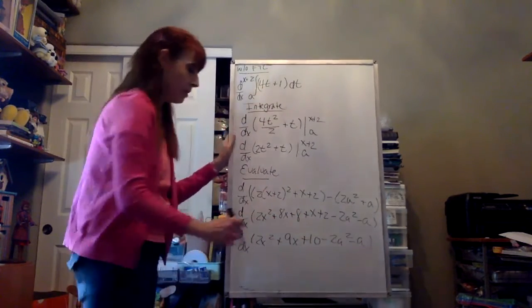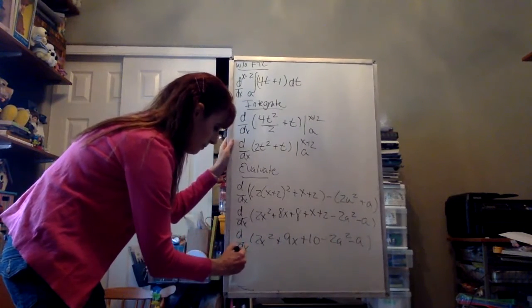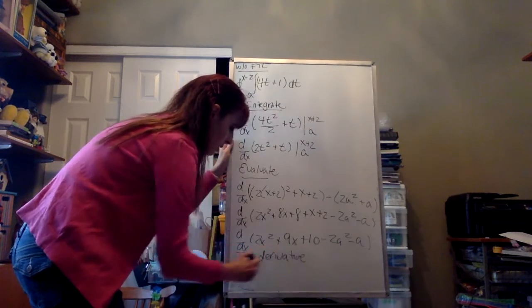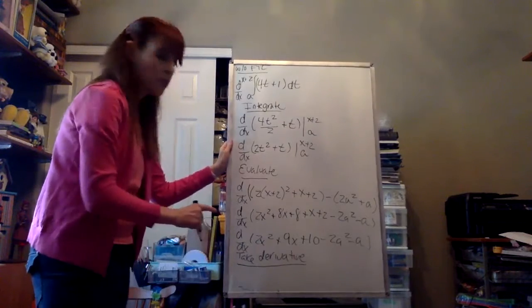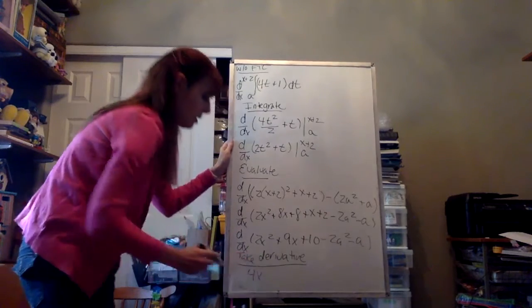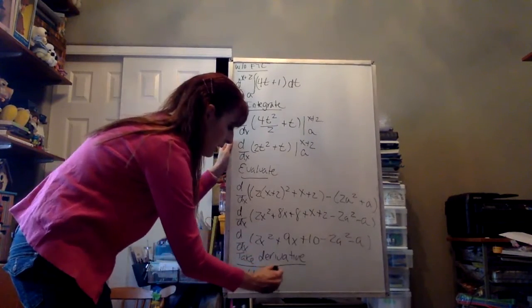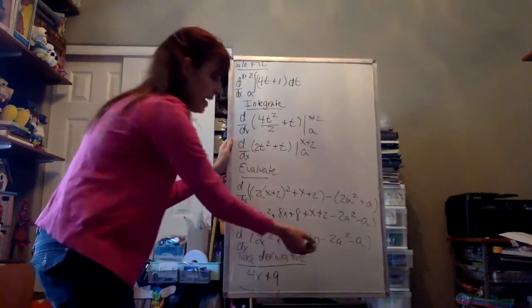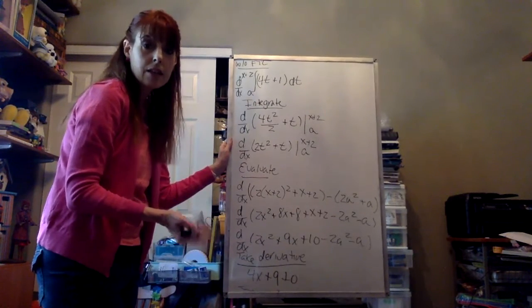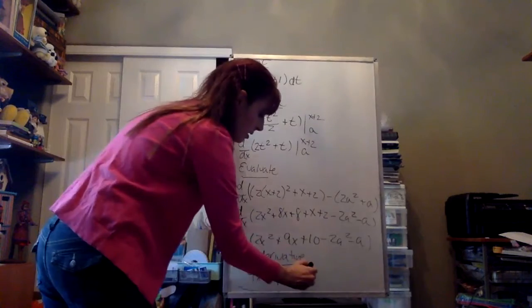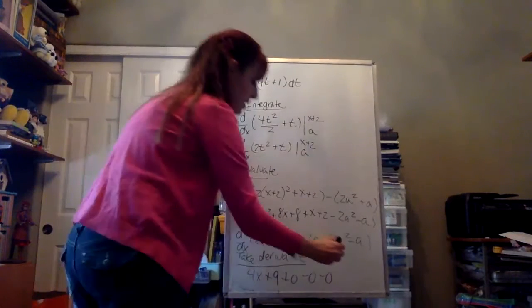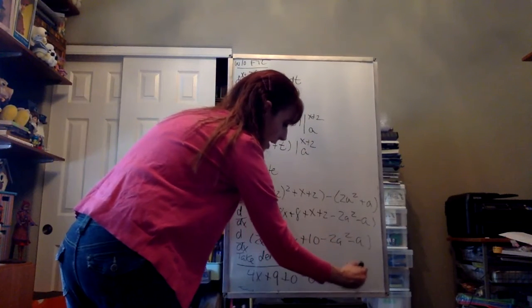Now we're going to do the last step, which is to take the derivative. The derivative of 2x² is 4x. The derivative of 9x is 9. The derivative of 10, a constant, is 0. The derivative of −2a² is also 0, because a is a constant. And the derivative of −a is 0 as well, since a is a constant and the derivative of a constant is 0. That just leaves us with 4x + 9.